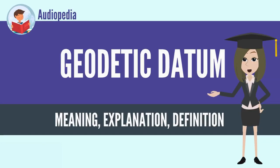A geodetic datum or geodetic system is a coordinate system and a set of reference points used to locate places on the Earth or similar objects. An approximate definition of sea level is the datum WGS 84, an ellipsoid, whereas a more accurate definition is Earth Gravitational Model 2008 (EGM 2008), using at least 2,159 spherical harmonics.